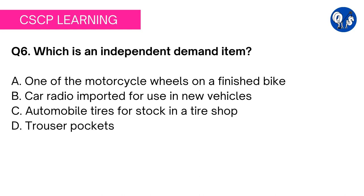Question 6: which is an independent demand item? Option A: one of the motorcycle wheels on a finished bike. Option B: car radio imported for use in new vehicles. Option C: automobile tires for stock in a tire shop. Option D: trouser pockets. Before evaluating the options, this is a very important concept — people can make mistakes if they fail to understand the core concept. Let me differentiate between dependent and independent demand items.